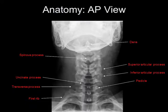On the AP view, you can see the dens projecting over the mandible. You can also see the spinous processes. You can see the uncinate processes of the vertebral bodies, which are these pointy structures. You can see the transverse processes, the superior and inferior articular processes, and the pedicles, which are round.